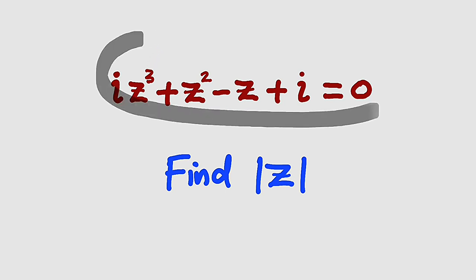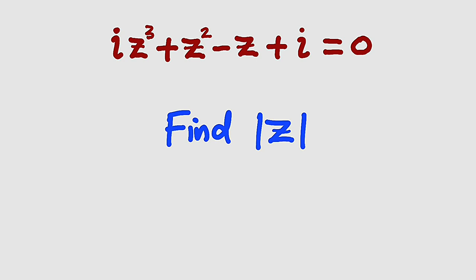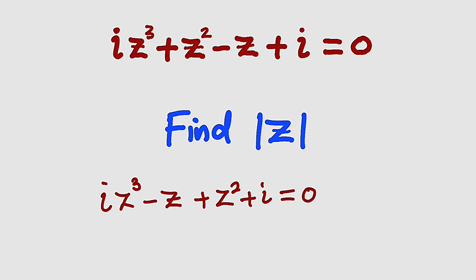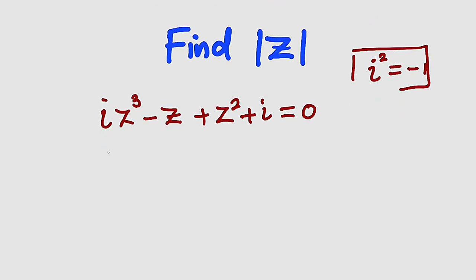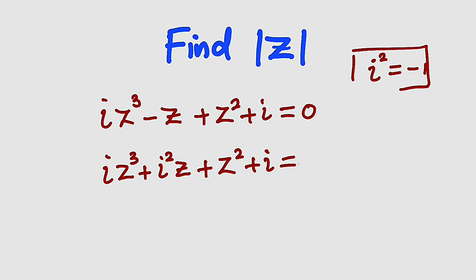I would like to take this equation and solve for z first. We can rearrange it as iz³, then bring negative z here, then take z² + i together. This is equal to zero. Remember that i² = -1, therefore we can attach i² here and remove the negative sign. This gives us iz³ + i²z + z² + i = 0.